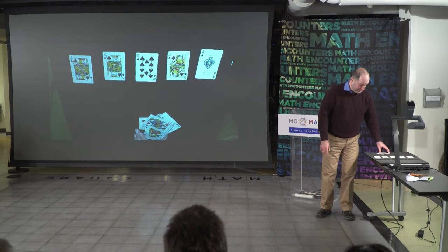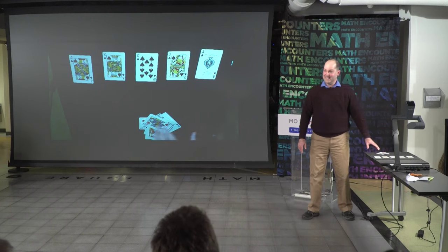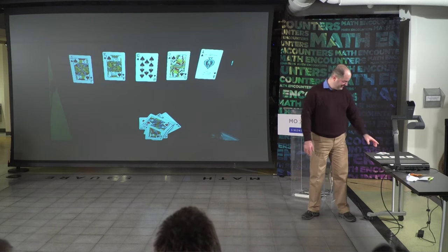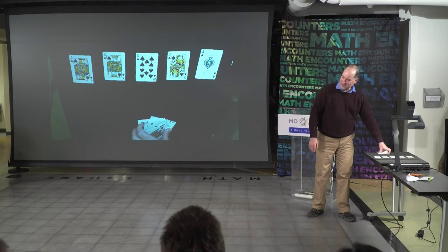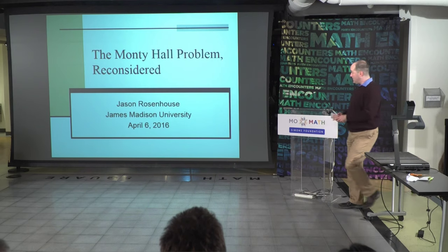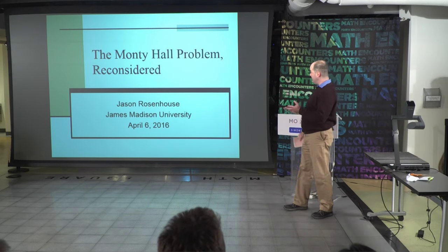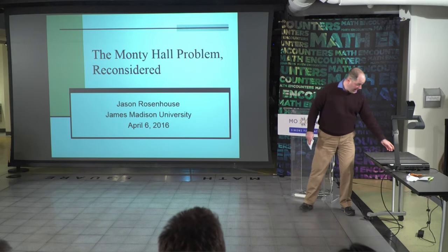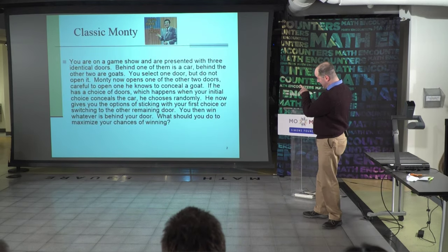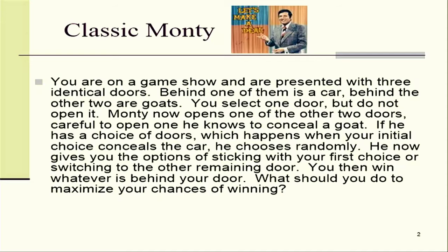The problem with starting with that trick is that I have this terrible fear that the trick is better than my talk. So hopefully the rest of this will not be a letdown. So this is a demo — I'm going to talk about the Monty Hall problem. The Monty Hall problem is a famous problem of probability theory. I guess we might as well get right to it.